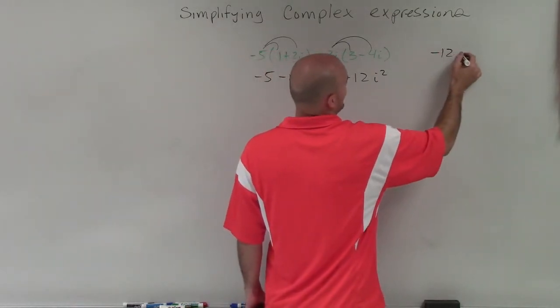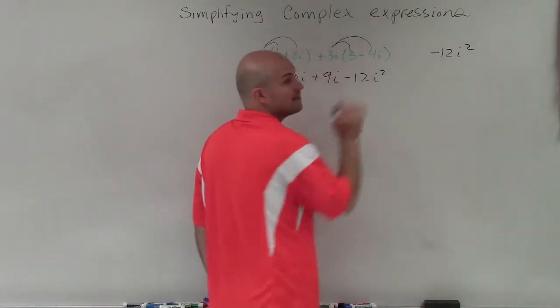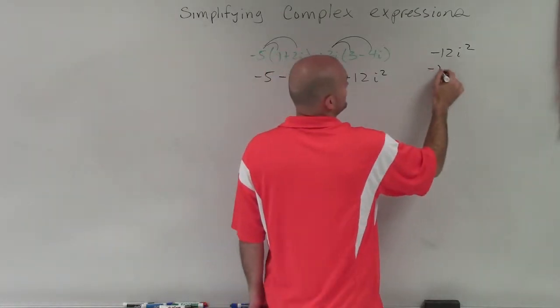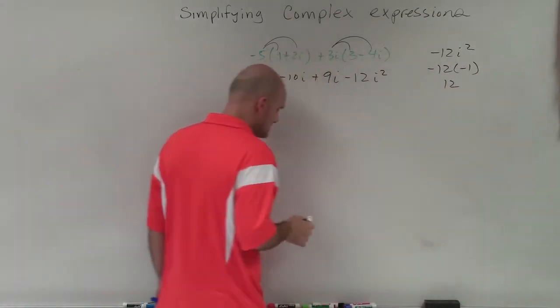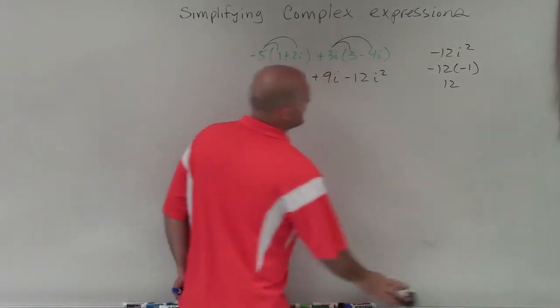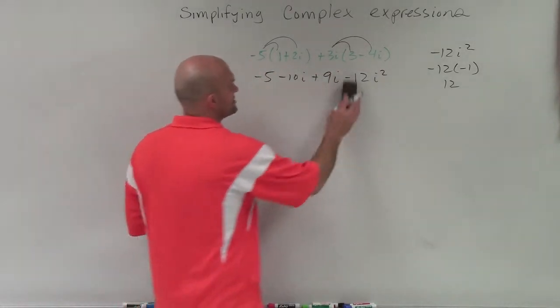But when we're writing this, if I have negative 12i squared, remember we can re-represent i squared as negative 1. Negative 1 times negative 12 is going to be positive 12. So I'm going to rewrite the negative 12i squared as now positive 12.